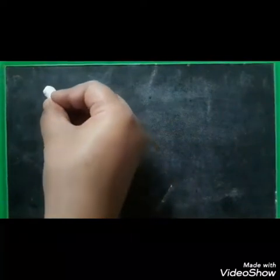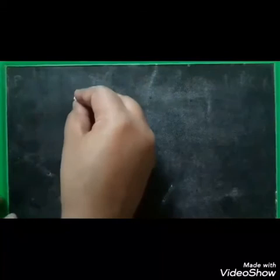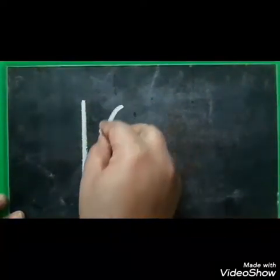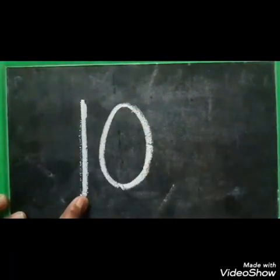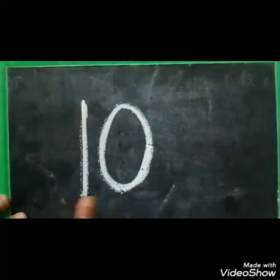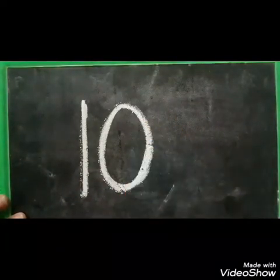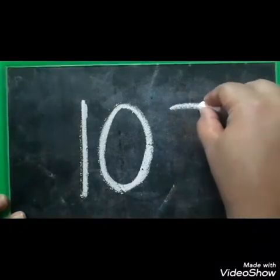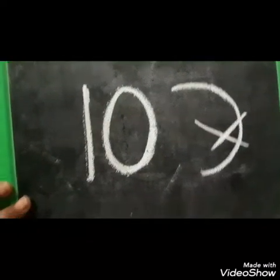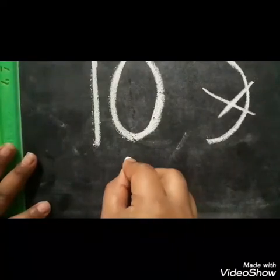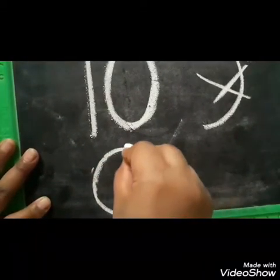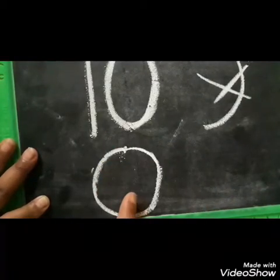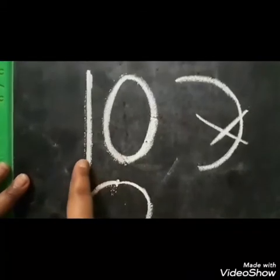Now let's see how to write number 10. Here we are going to use the pattern standing line — number 1. Then a big oval is 0. Standing line — number 1 and 0. 1, 0, 10. How are we going to write 0? Are we supposed to write 0 from the right side? Wrong. We should take the curve from the left side, then turn and go up and touch. This is how we form a 0. So 1, 0 — 10.